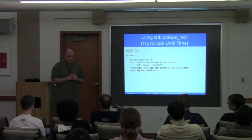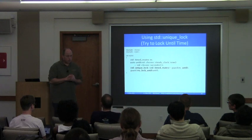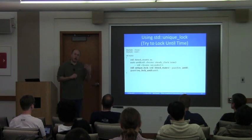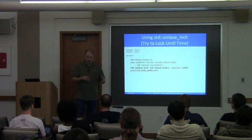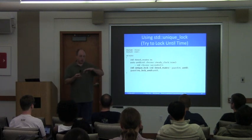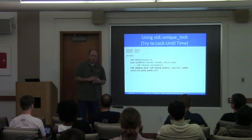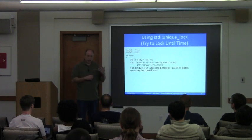Question: how many times does it try to acquire the lock — every clock cycle? The question of how it figures out when the timeout occurs versus when it's able to acquire the lock is an implementation detail. It's not specified. It's not going to do a busy wait in most cases, but the exact details at that level are implementation-defined.